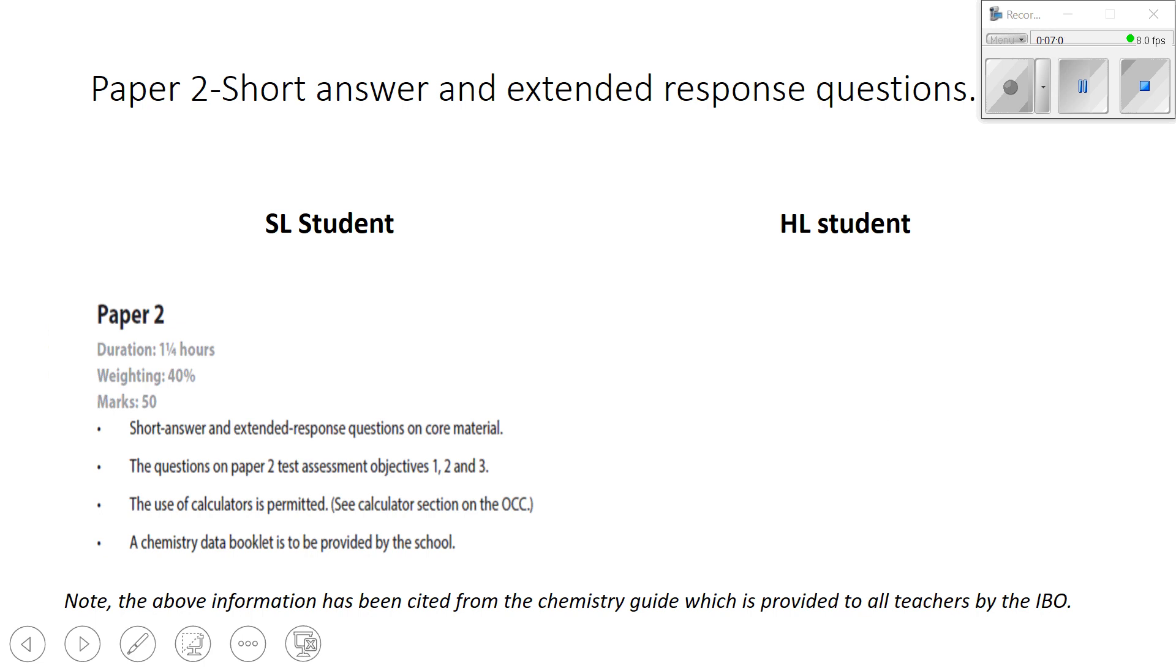Okay, the structure of paper two, if you're a standard level student, it's an hour and 15 minutes. The weighting is 40%. So there's a big weighting for paper two, if you're a standard level student and 50 marks. Now you may have eight questions on paper two, you may have seven, but the total marks will add up to 50. You have short answer and extended response questions on the core material. You're often provided with boxes or spaces with lines to answer your questions on. So it's very important to stay within those parameters. So there's an expression of think outside the box, but write inside the box, because when these papers are sent away, they're scanned and the examiners only mark what's inside the box. If you're writing outside the box, then it's ignored.